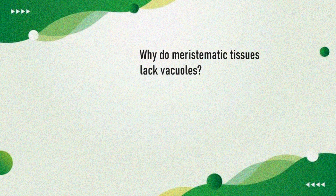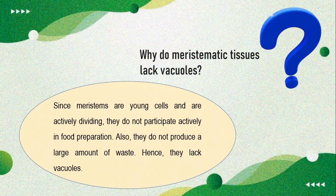Fifth, meristematic tissues lack vacuoles. Why? Because meristems are actively dividing or young growing cells, they do not participate actively in food preparation. Therefore, they do not produce large amounts of waste, and hence they lack vacuoles.